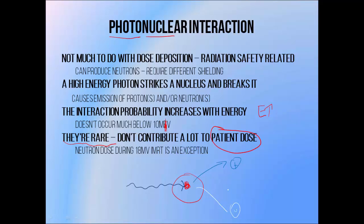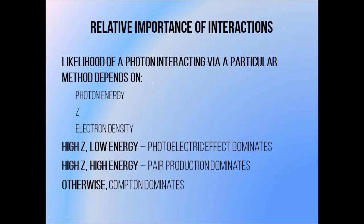The main reason that photonuclear interaction is of interest is as a consideration in radiation protection. It can produce neutrons which can quite happily bounce around inside and through high atomic number materials like lead, which are typically used to shield against low energy X-ray beams. This is why we use concrete to shield against high energy photon beams instead, since it contains a lot of low atomic number materials which are much better at absorbing neutrons.